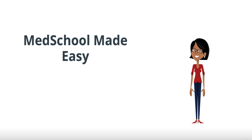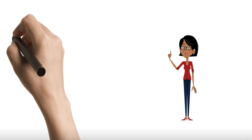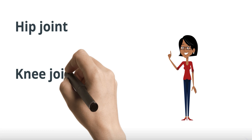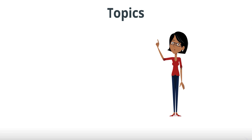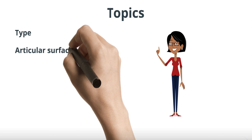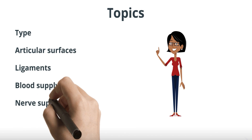Welcome to Med School Made Easy. Today we'll have a quick recap on the joints of the lower limb, looking at the hip joint, the knee joint, and the ankle joint. We'll cover the type of joint, the articular surfaces, the ligaments, the blood supply, the innervation, and the movements of these joints.